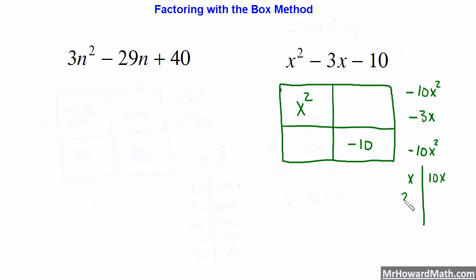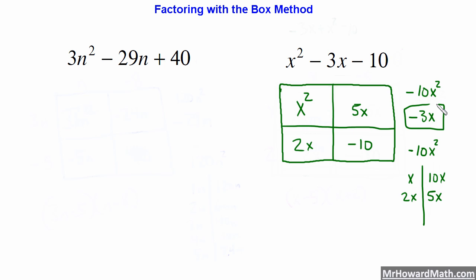We've got our terms and products. It doesn't matter where we write them, so I'll write 2X and 5X. Now we need to apply our signs. We need a negative 10X squared, so one of these has to be negative — either the 5X or the 2X. Since the sum is negative, our biggest number — in this case 5 — wins the sign. So that's going to be a minus 5X and a plus 2X.